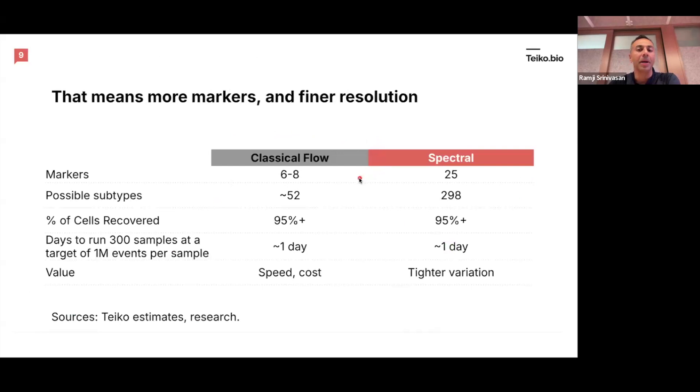This is a comparison between these two from a drug developer standpoint. Classical flow, you can potentially look at six to eight markers. It means about 52 potential subsets, depending on how you count out and how you build out your panel. You can recover a lot of cells, it's fast to run, and obviously it's affordable. Spectral, you can run more markers, and you can get a potentially six-fold increase in the number of subsets that you're able to analyze. A lot more cells recovered and a lot faster, and then obviously tighter variation because you're going to be collecting a lot of events. So that means for a drug developer, more markers and finer resolution on what your therapy is doing to these different immune subsets.